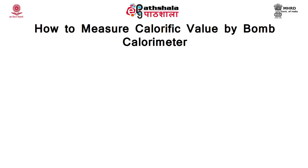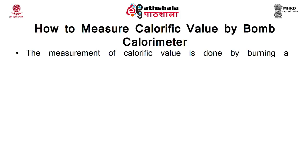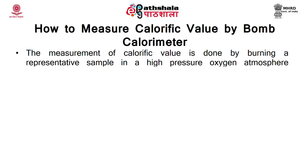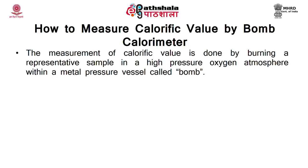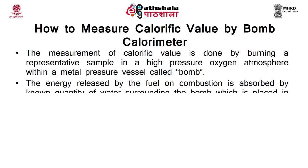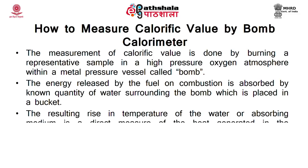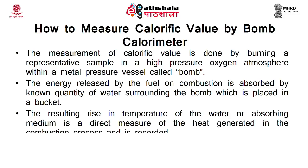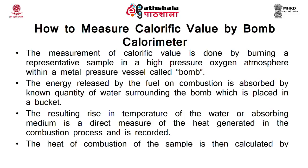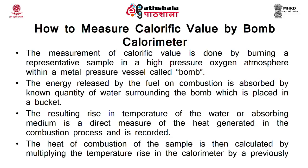Let us see how to measure calorific value using the bomb calorimeter. The measurement is done by burning a representative sample in a high-pressure oxygen atmosphere within the metal pressure vessel called the bomb. The energy released by the fuel on combustion is absorbed by a known quantity of water surrounding the bomb in a bucket. The resulting rise in temperature of the water is a direct measure of heat generated in the combustion process. The heat of combustion is then calculated by multiplying the temperature rise by a previously determined energy equivalent.